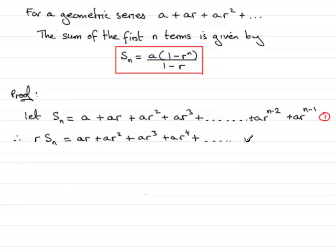So we get ar cubed plus ar to the power 4 plus and so on. And if I multiply this term by r, I'm going to get ar to the power n minus 1. And then if I multiply this last term by r, I'm going to get ar to the power n. Okay, let's call this equation now number 2.